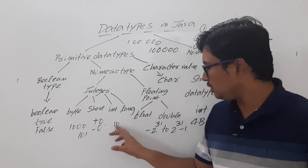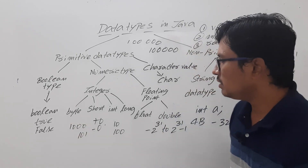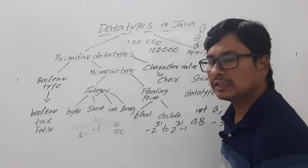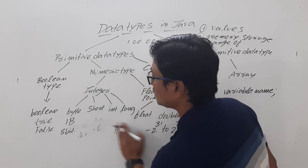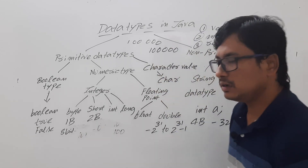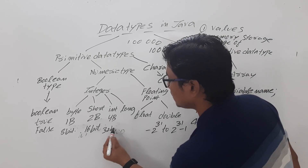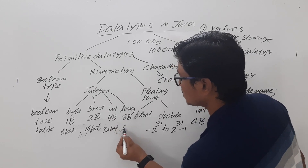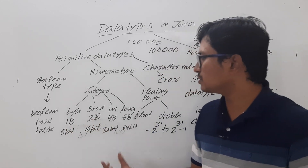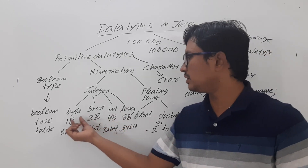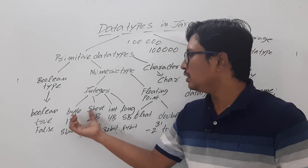Suppose you want to store the value 10. Why should you take an int which occupies four bytes? Instead, you can take the smallest one. So based on memory, they classified into four types: byte occupies one byte (8 bits), short occupies two bytes (16 bits), int is four bytes (32 bits), and long is eight bytes (64 bits). Based on the memory, you can hold different range of values. If you want to store 10, you can represent it using one byte as well.